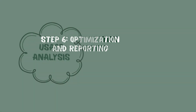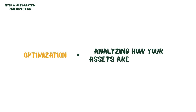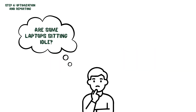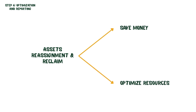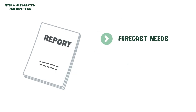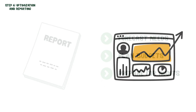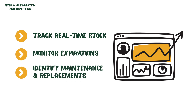Step 6: Optimization and Reporting. Analyze usage and optimize your inventory. Optimization means analyzing how your assets are being used — are some laptops sitting idle? Are software licenses underutilized? Reassigning or reclaiming these assets helps you save money and get the most out of your resources. Reporting gives you a clear picture of your inventory and can be used to forecast future needs, plan budgets, and prepare for audits. Dashboards can show real-time stock levels, upcoming expirations, and which assets need maintenance or replacement.